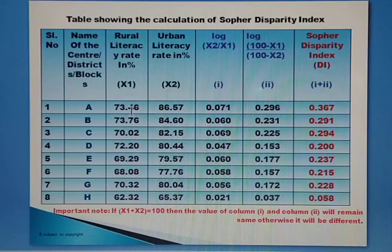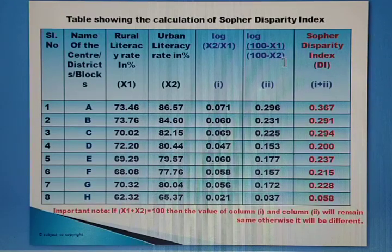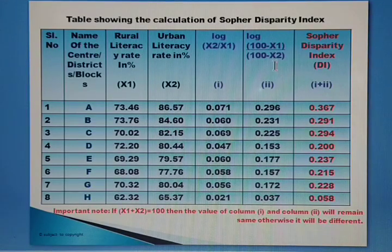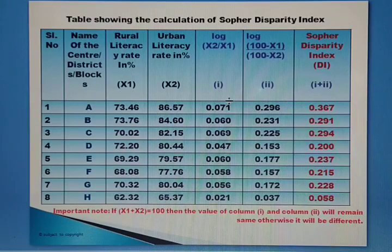Continuing Column 2: 100 minus x1 equals 100 − 73.46, and 100 minus x2 equals 100 − 86.57. Taking the log of that ratio gives 0.296.